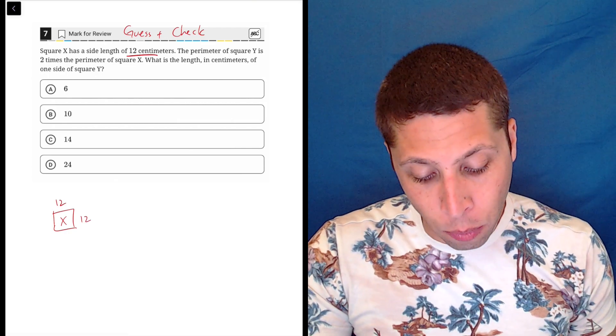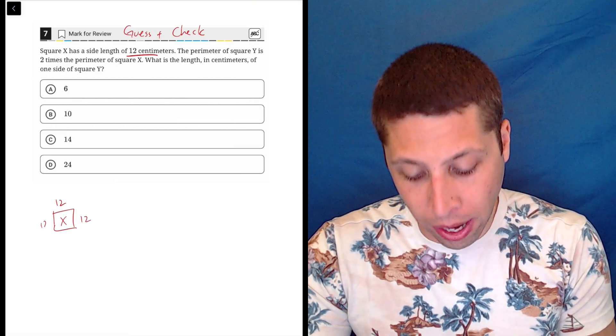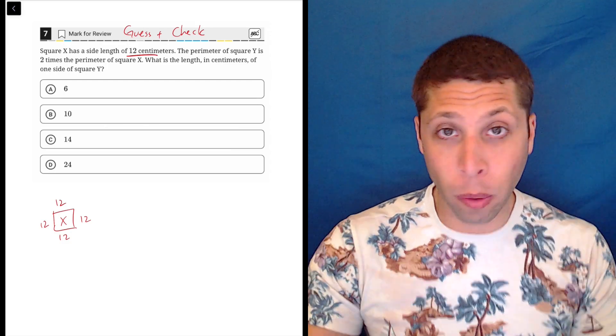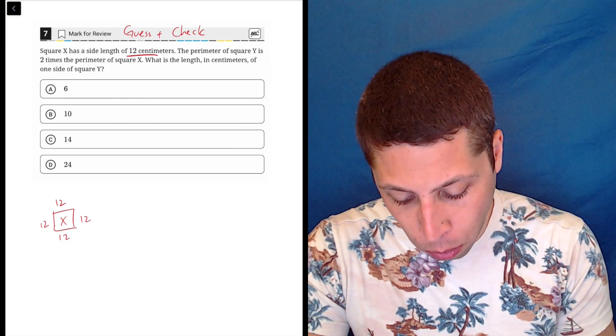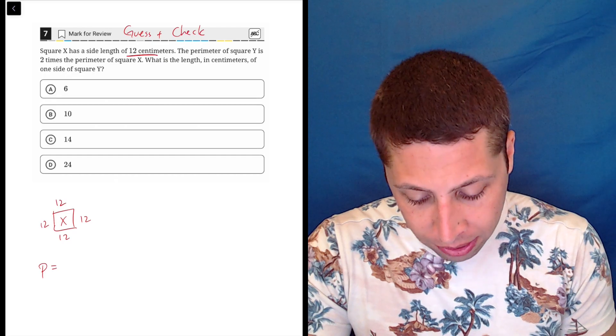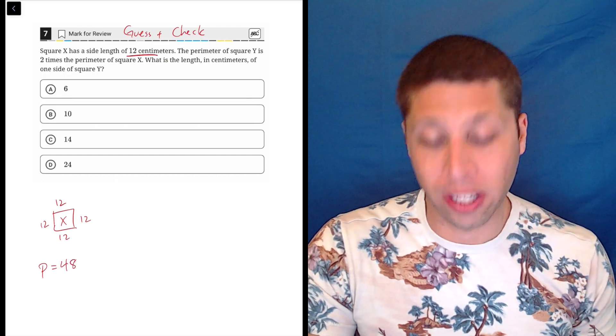And what do they want? They want the perimeter of it, so we should find that. What is the perimeter? It's the sum of all the sides. So for a square, it's really easy. You just multiply the side length by four. So in this case, the perimeter for x is 48, four times 12.